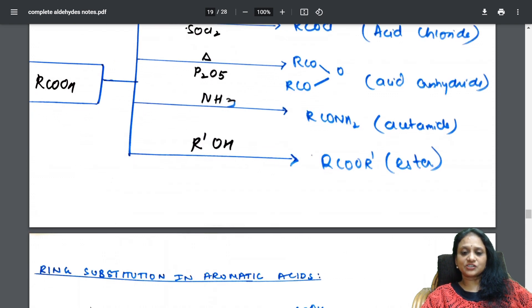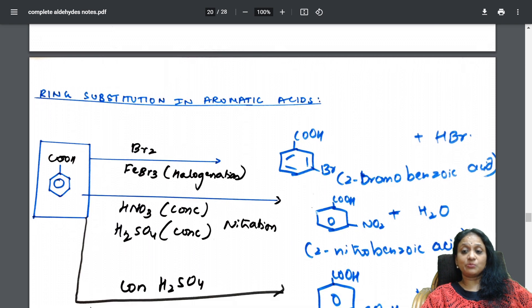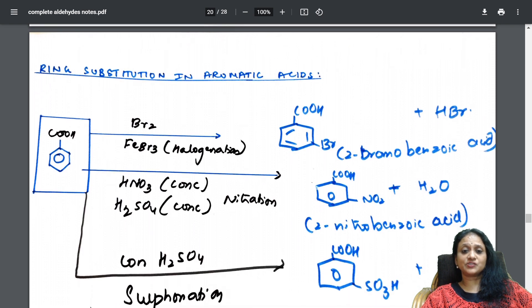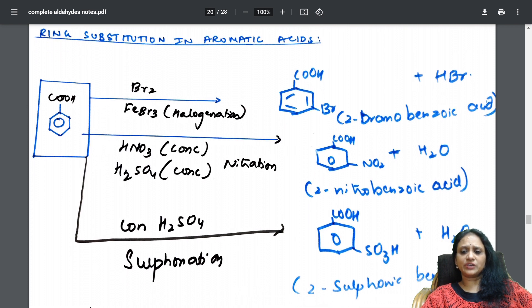After the carboxylic acid reactions. Slowly, I have gone to a part called benzoic acid. Aromatic acid reactions. All your halogenation. Nitration. Sulfonation. You very well know. Carboxylic acid is meta directing. So, I have shown all the meta directing products. Along with the names also. Please go to that.